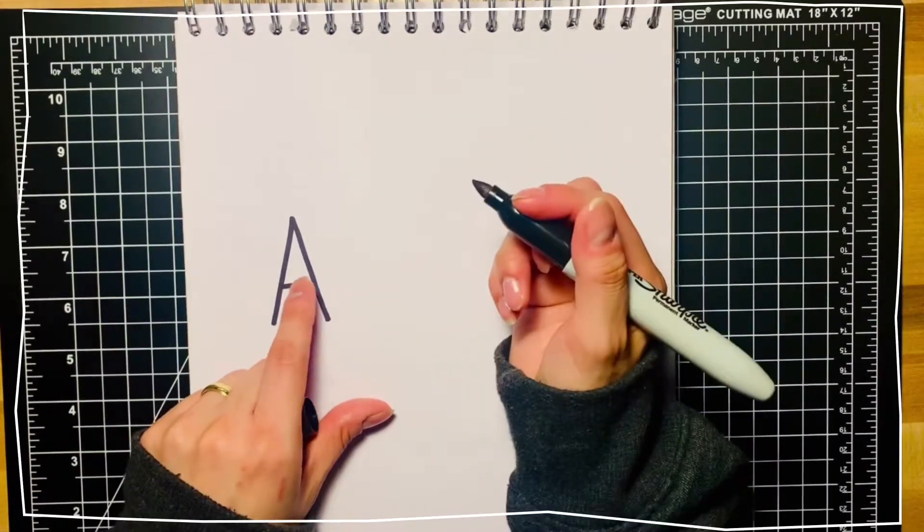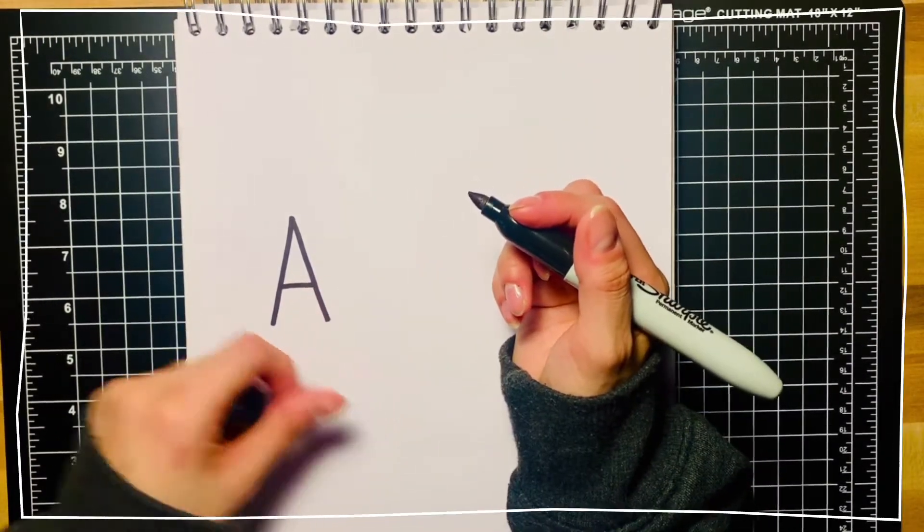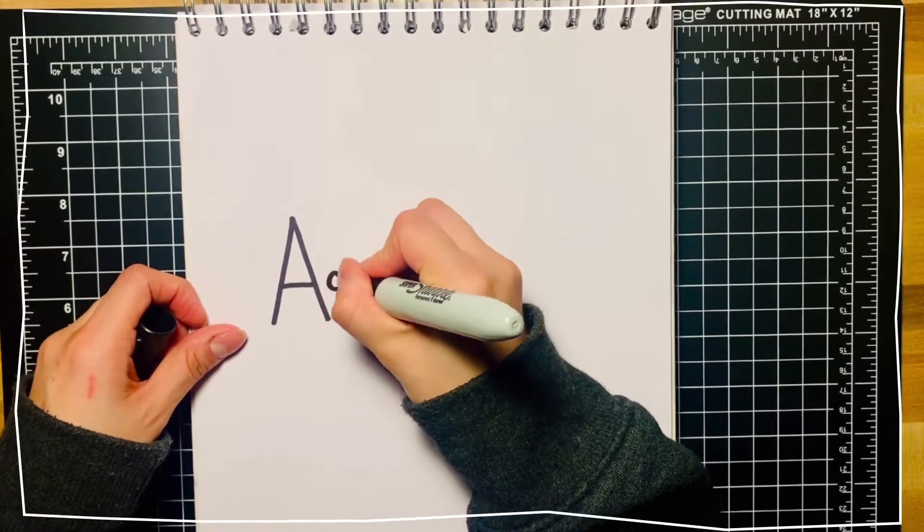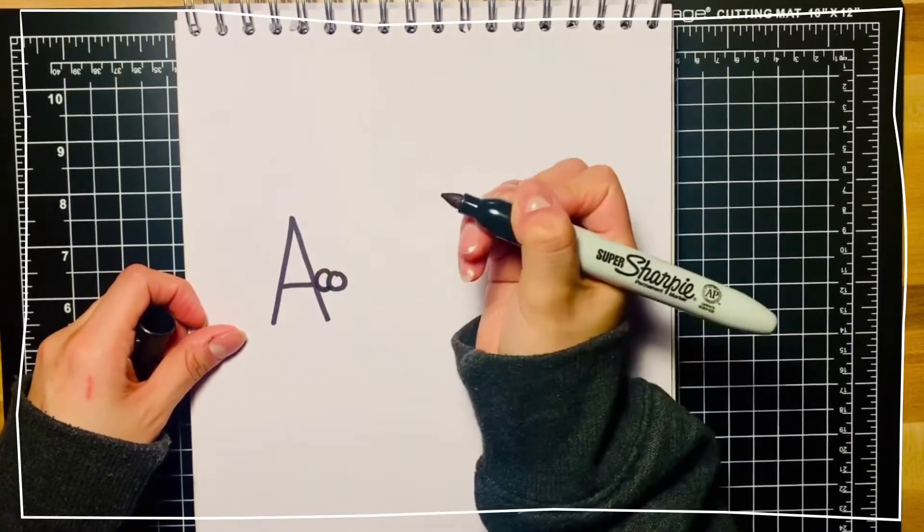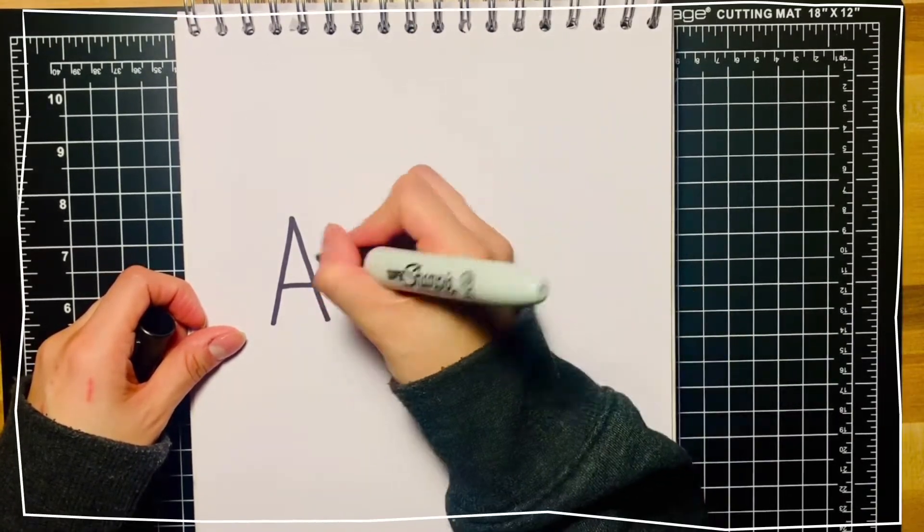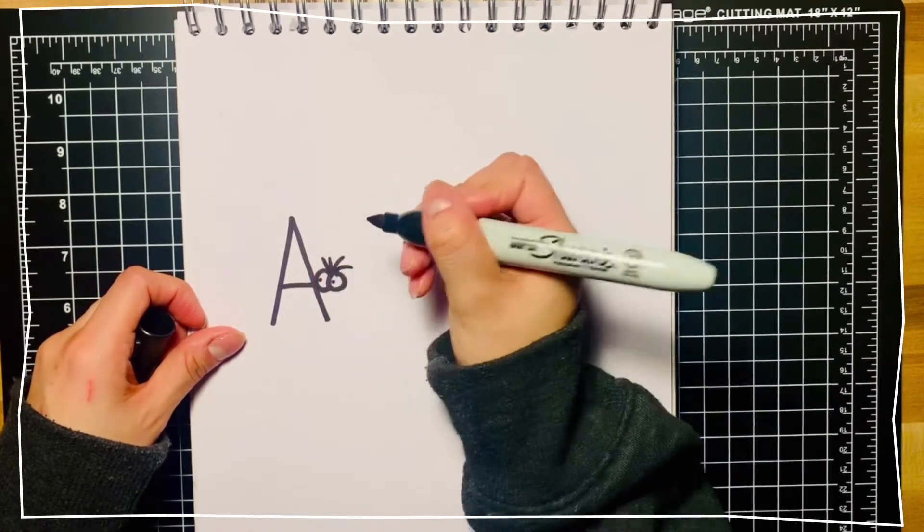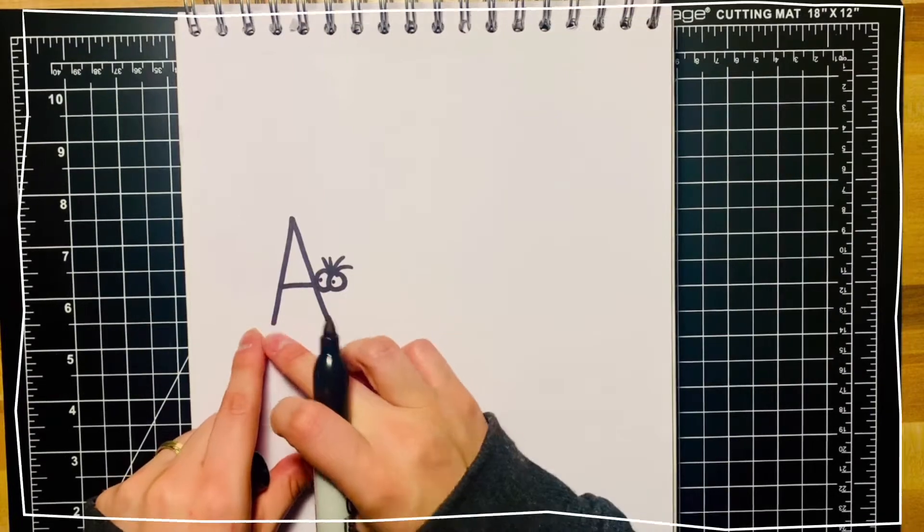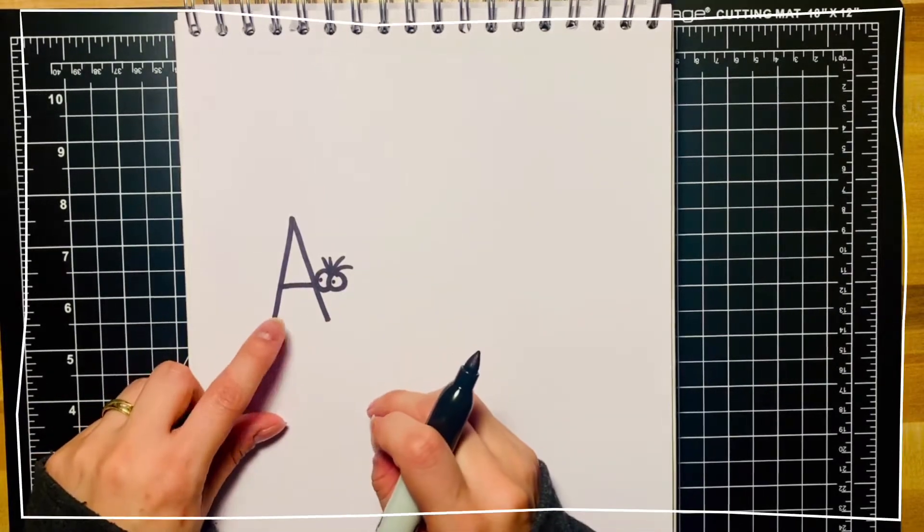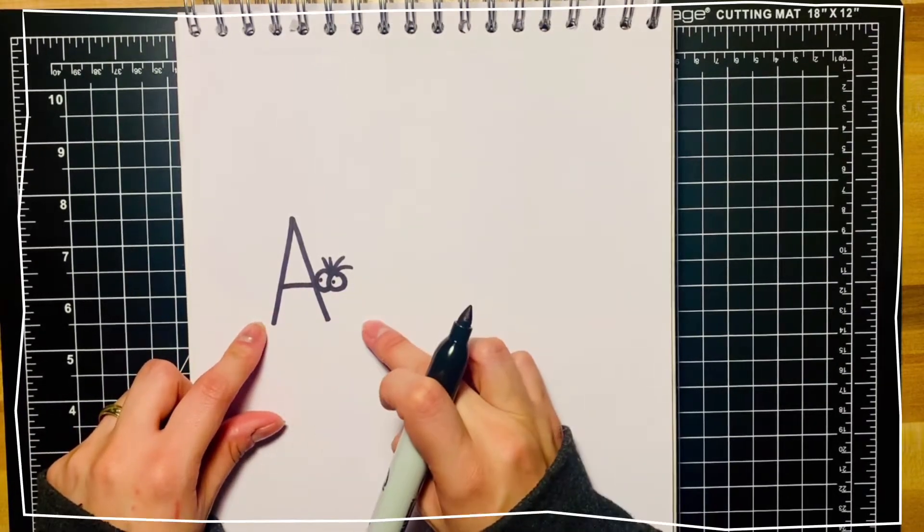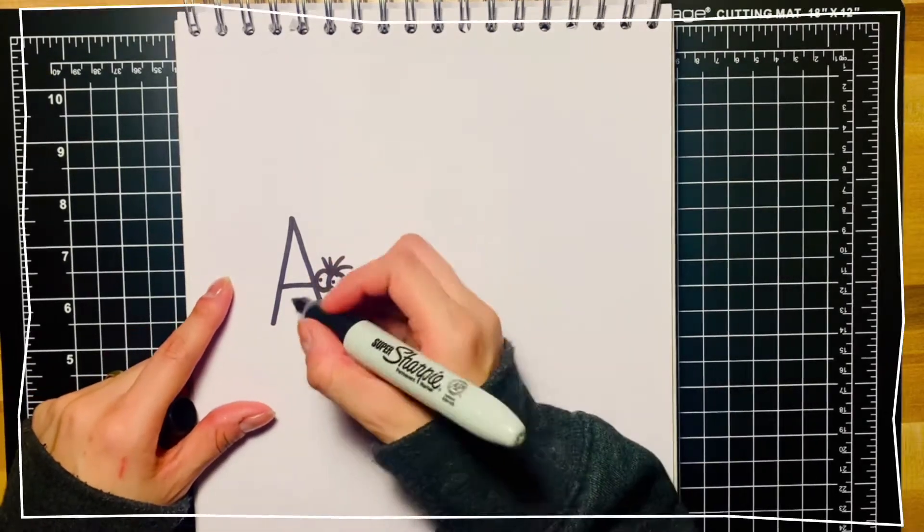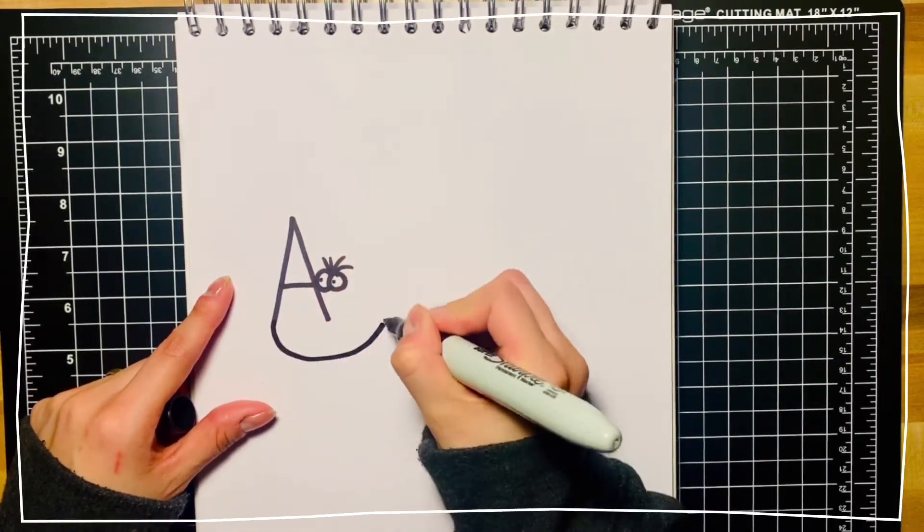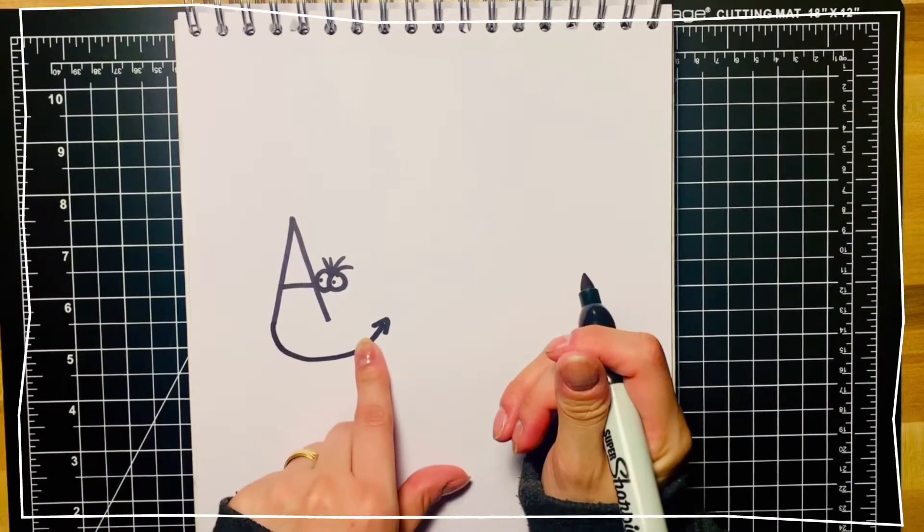Next, next to the line, we're going to draw some eyes. There we go. Now we're going to draw a mouth. It's going to come from this side of the A all the way across. Just like that.